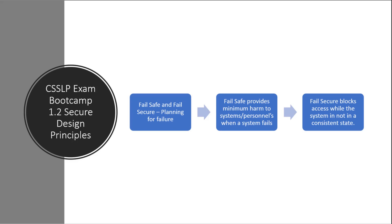Fail secure is a little different. Basically it blocks access when the system is not available — if it's not in a consistent state.